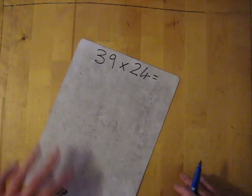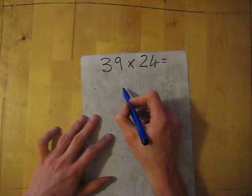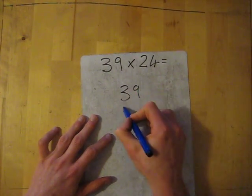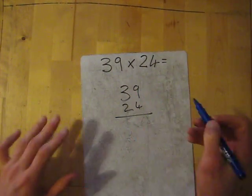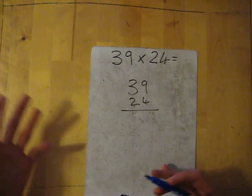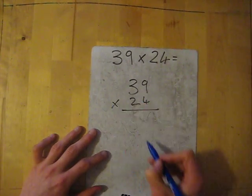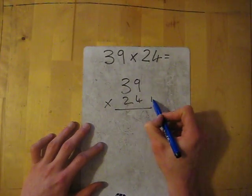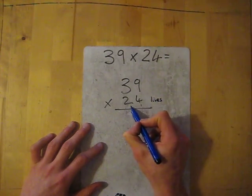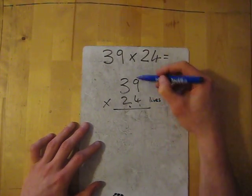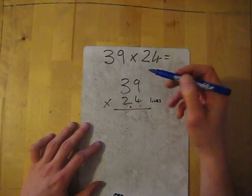So let's see, 39 times 24. So again, set it out, 39, 24. With multiplication, I'll keep saying it, you don't need to line it up. Multiplication sign. So this is our lives. This is life one, and this is life two. So we're going to use life one to kill all the numbers first, as we did.